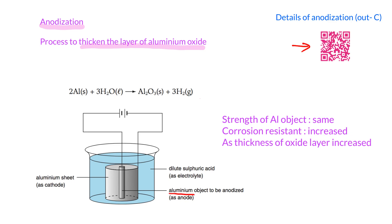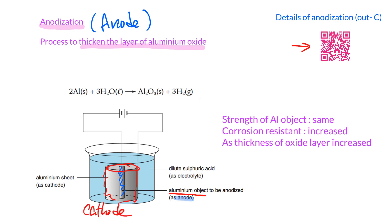What you need to know is that in anodization, the aluminium object is placed at the anode. The word 'anodization' itself contains the word 'anode,' which refers to one of the electrodes in this setup. You will learn more about this in the topic of redox reactions. The anode is one electrode, while the other is called the cathode. The aluminium article is placed at the anode.